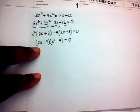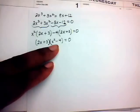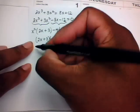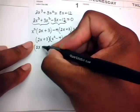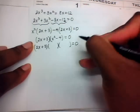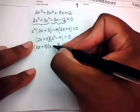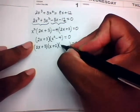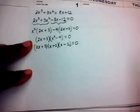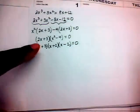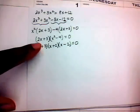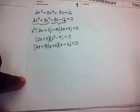This gives us (2x + 3)(x² − 4) = 0. We can factor further since x² − 4 is a difference of squares: x² − 4 = (x + 2)(x − 2). So fully factored: (2x + 3)(x + 2)(x − 2) = 0.